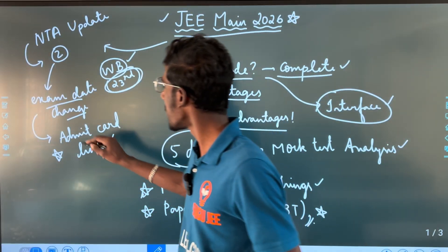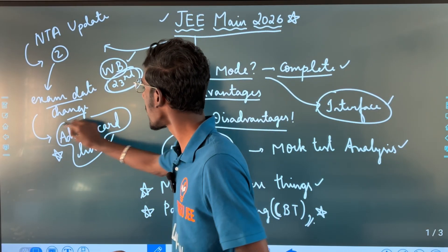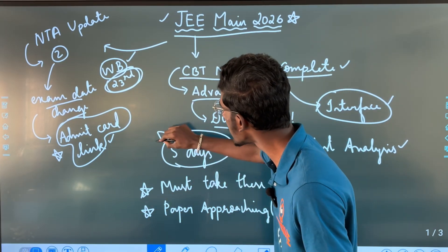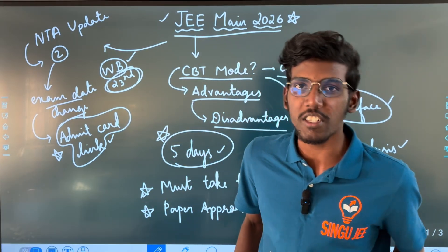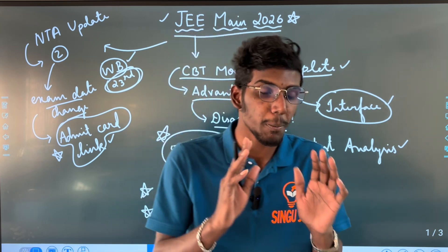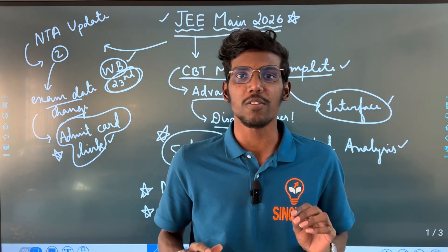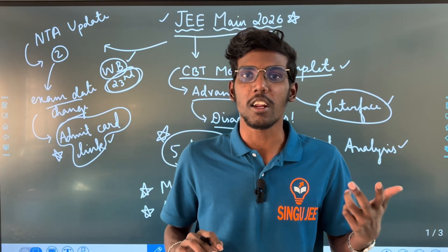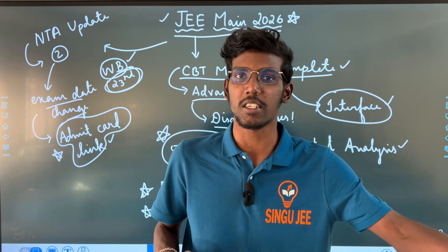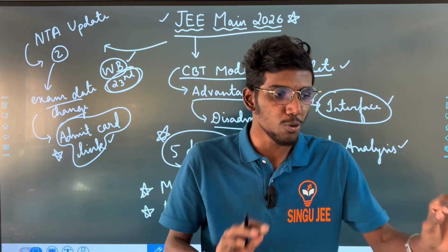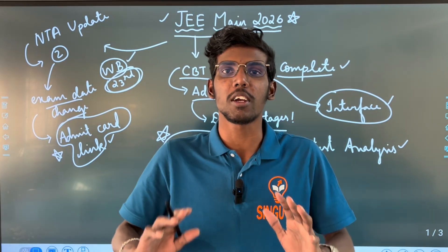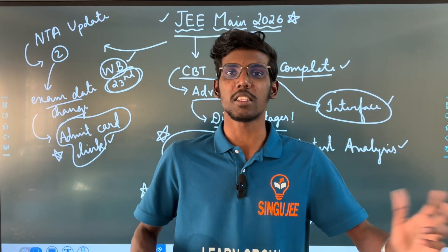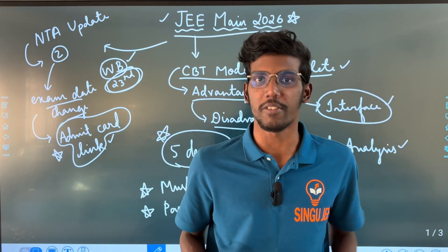The next update is the Admit Card link. The Admit Card will be released 5 days before the exam. If the 20th January exam starts, the Admit Card will come around 3 days before — on 16th January. So if the exam is on 21st or 23rd, the Admit Card will come on the 21st, 22nd, or if it's 23rd or 24th, then around the 28th.